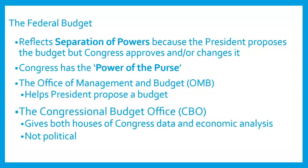The federal budget is not like a household budget because the federal budget can run a deficit each year and keep borrowing money indefinitely. The federal budget process reflects separation of powers: the president proposes the budget, but Congress has to approve or change it and then send it back to the president to be signed. Congress has the power of the purse. The OMB — Office of Management and Budget — helps the president propose a budget by estimating costs and impacts. You also have the Congressional Budget Office, which scores bills by looking at proposed legislation and deciding how much it will cost over time. It's supposed to be nonpolitical.